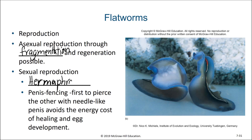Here we see two turbellarian flatworms participating in a mating ritual known as penis fencing. Both flatworms have a needle-like penis and they are attempting to inject the other. For the flatworm that is successful, they will deposit sperm into the body of the other, and they avoid the cost of healing wounds and developing eggs fertilized by those sperm cells.